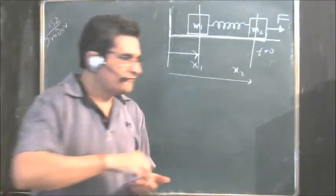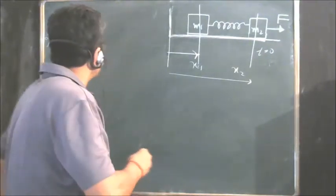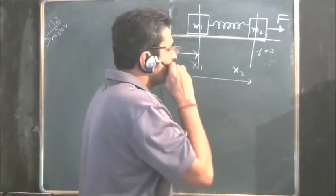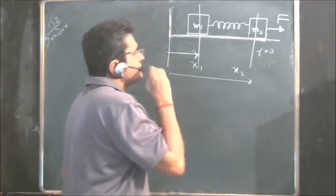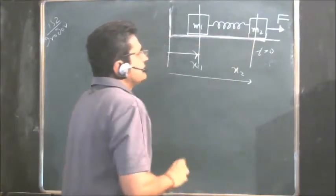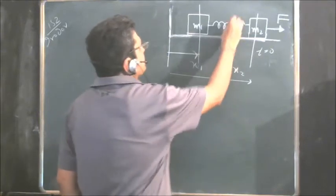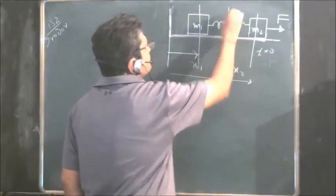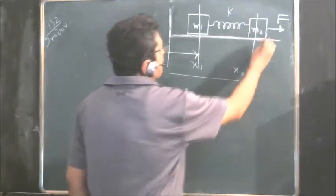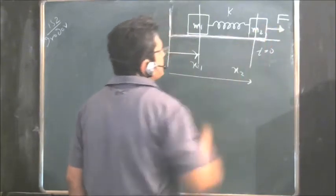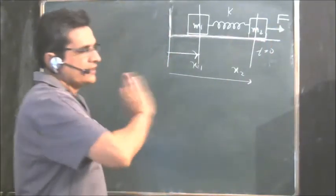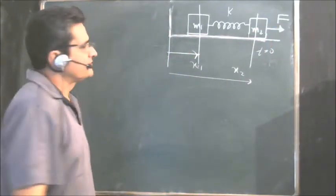We will solve Irodov Problem 152, Chapter 1. In this problem, there are two masses which are connected by a spring. K is the spring constant. F is applied on mass 2 and the movement takes place.